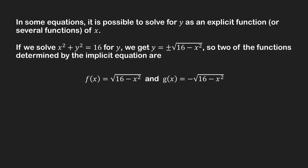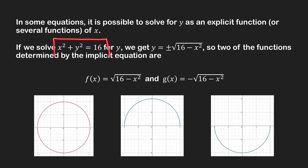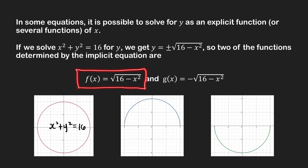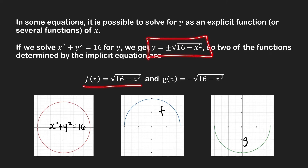The graphs of these two functions are just semicircles. The graph of x squared plus y squared equal to 16 is a circle centered at the origin of radius 4. The upper semicircle is the graph of f of x equal to the square root of 16 minus x squared, and the lower semicircle is the graph of the function g. Now that we have written y in terms of x, we can easily use our previous techniques to find the derivative of these two functions.